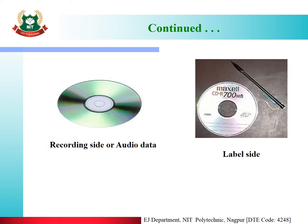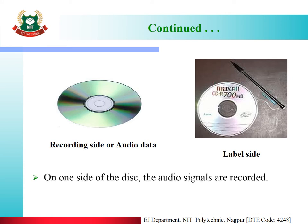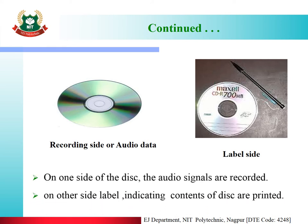On one side of the disk, the audio signals are recorded — this is called the recording side or audio data side. On the other side, a label indicating the contents of the disk is printed — this is the label side used for labeling the contents of the CD.